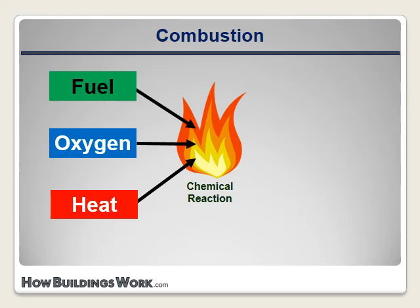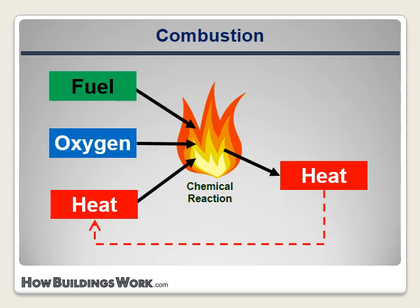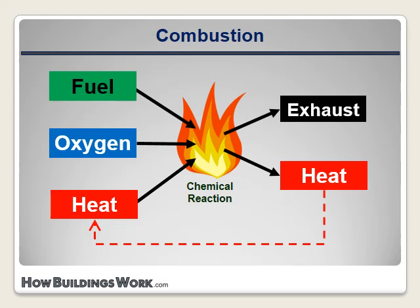During combustion, more heat is given off, and some of that heat serves to keep the reaction going. In addition, new chemical substances are created from the fuel and the air. These substances are called exhaust or flue gases. Most of the exhaust comes from chemical combinations of the fuel and oxygen. Some can also come from chemical combinations of the oxygen and other components of the air that feeds the reaction. The combustion process can be controlled or stopped by controlling the amount of fuel available, the amount of oxygen available, or the presence of the initial source of ignition heat.